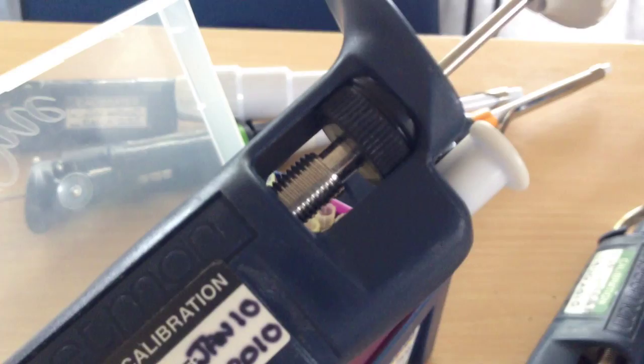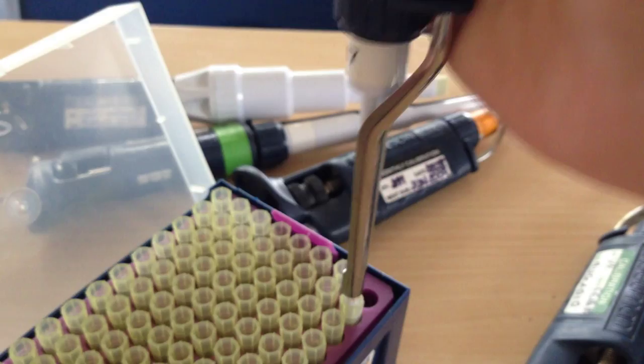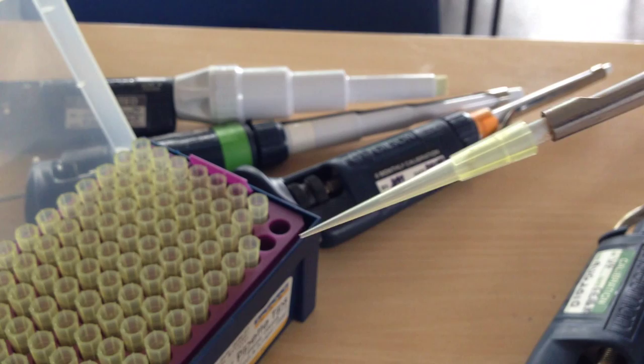Now to get the tip off is this bit here. That's the bit that you need to press to get the tip off. So you press it. This bit will come down and the tip will pop off like that.